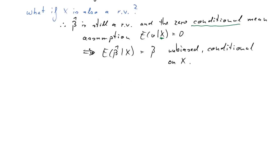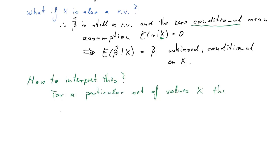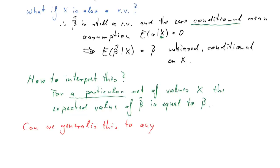To understand the implication of this slight difference in results, we need to know how to interpret this last statement. What we have said is that for a particular set of values of x, the expected value of beta hat is equal to beta — so it's unbiased. But that's valid for a particular value of x. The question is: can we generalize this to any set of values of x? Because in the end, our x's are one realization, but we usually want to generalize results to not be dependent on a particular x.